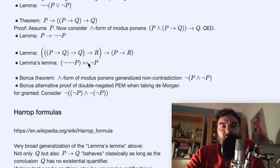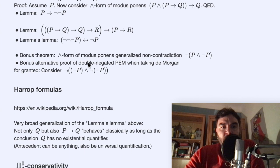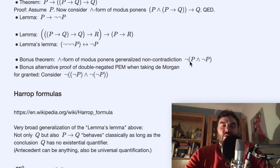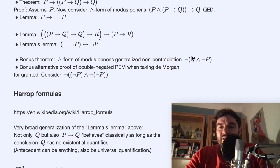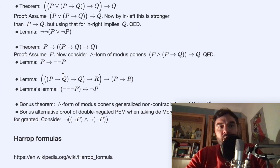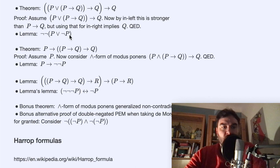As a bonus theorem, by modus ponens, if you also take q to be absurd, you get the non-contradiction principle — also a quick proof. Finally, if we take the non-contradiction principle for a negated statement and apply a valid de Morgan's law to pull out the negations from the conjunction, this is another way to recover the double-negated excluded middle.